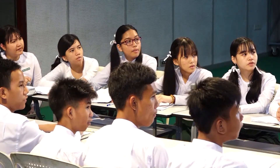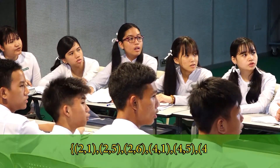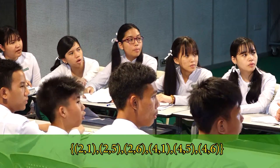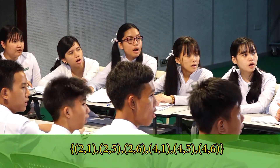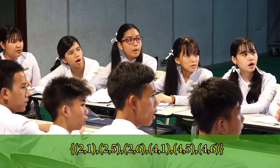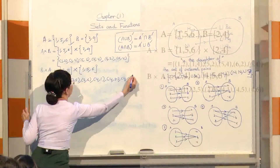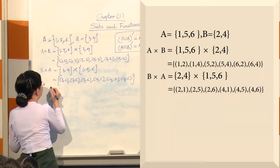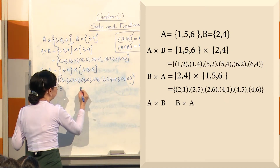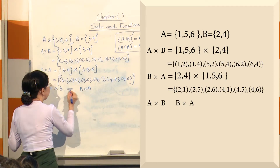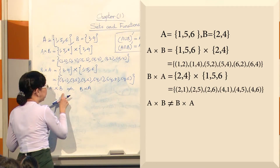The set {2, 4} cross the set {1, 5, 6} gives: (2,1), (2,5), (2,6), (4,1), (4,5), (4,6). This is A cross B. Note that A cross B is not equal to B cross A.